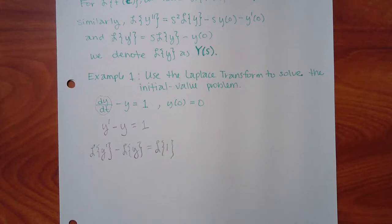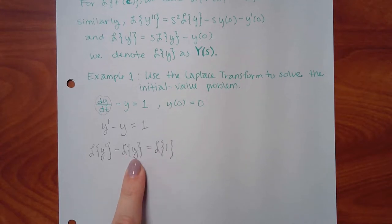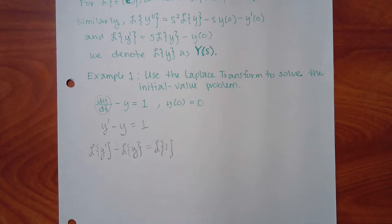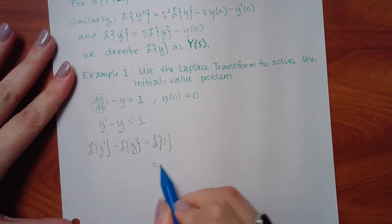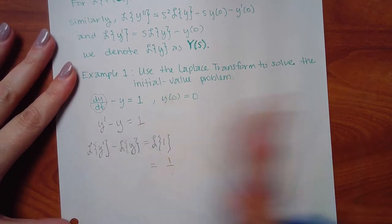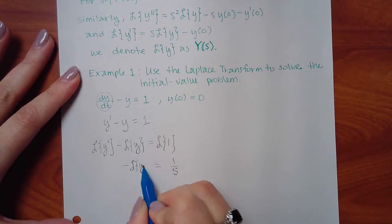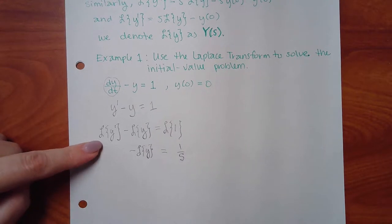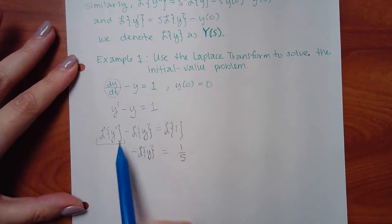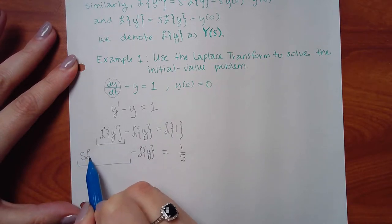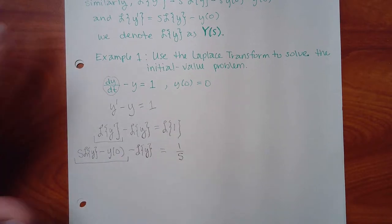For the minus Y term, I keep the minus on the outside. I don't know what the Laplace of Y is since it's an unknown function, but I can do the Laplace of 1 — that's 1 over s. This term I can transform using the definition: the Laplace of Y prime becomes s times Laplace of Y, minus Y of 0.